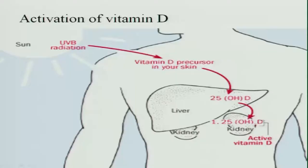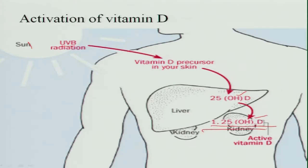Now let us see how the activation of vitamin D occurs. We get vitamin D from sun rays — the UV radiation when it touches the skin. The vitamin D in the form of 7-dehydrocholesterol enters into the skin, and this goes to the liver where it converts into 25-hydroxycholecalciferol. From there it reaches the kidney, where the active form — 1,25-dihydroxycholecalciferol — is produced, and in this form vitamin D helps in the absorption of calcium.